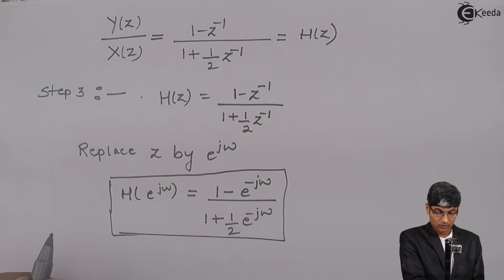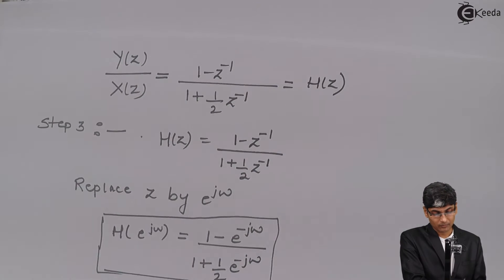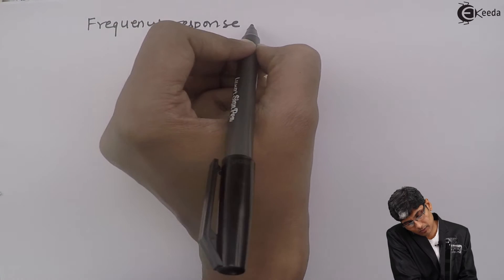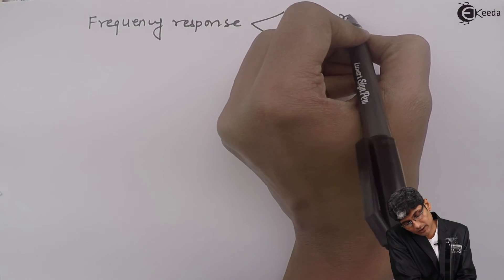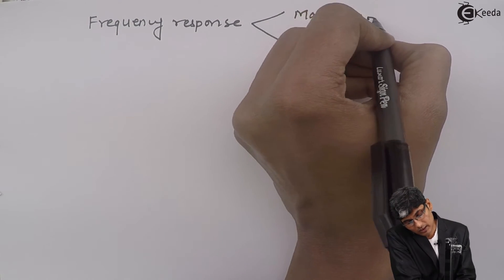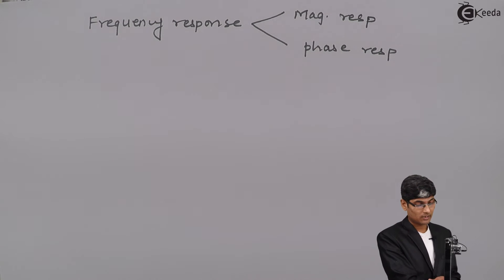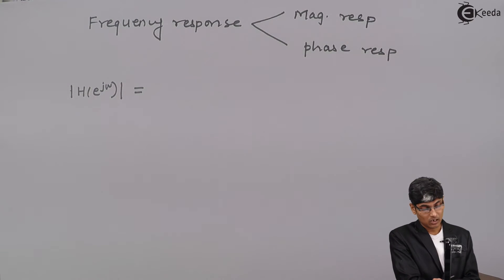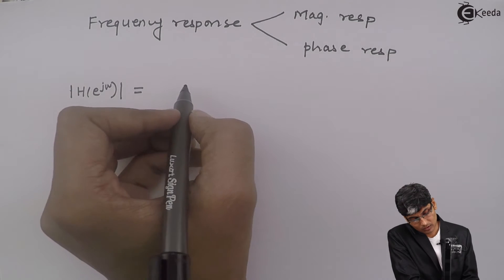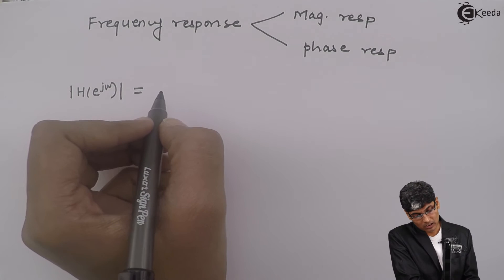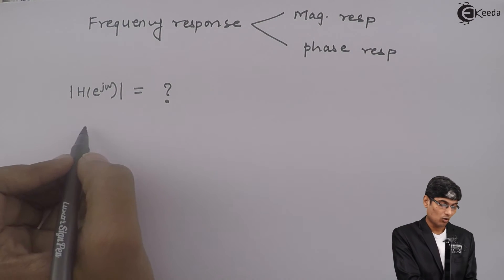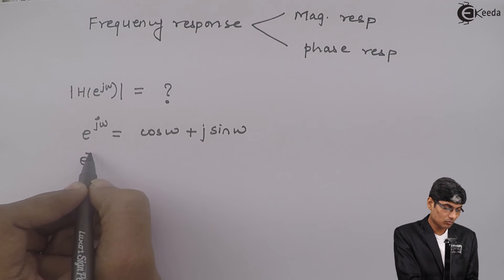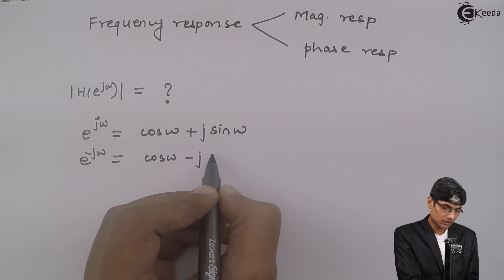We have obtained the transfer function. Now let us find the frequency response, which is split into two parts: the magnitude response and the phase response. To get the magnitude of H(e^(jω)), we first expand the exponentials — e^(jω) as cos ω + j sin ω and e^(-jω) as cos ω - j sin ω.